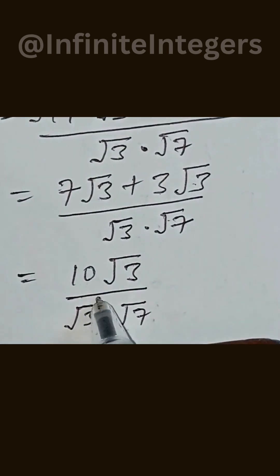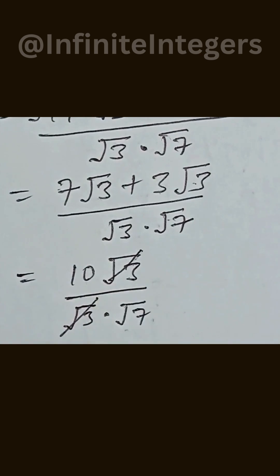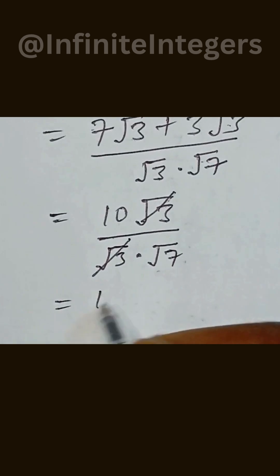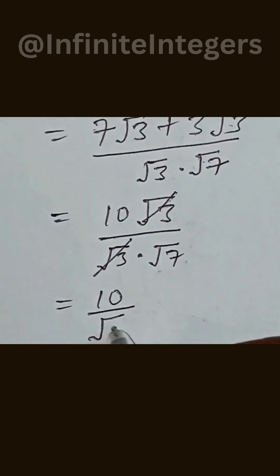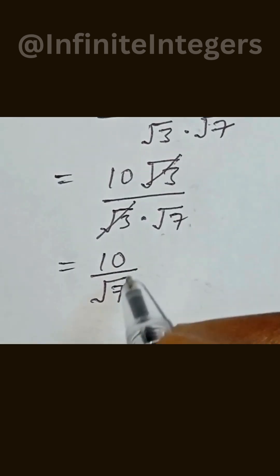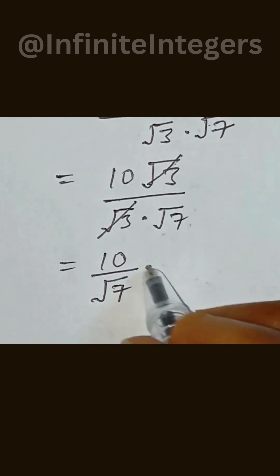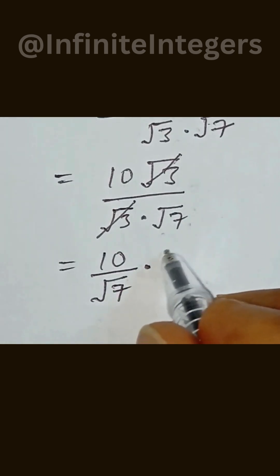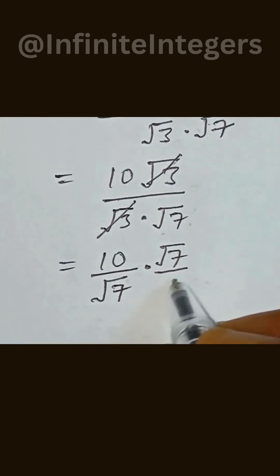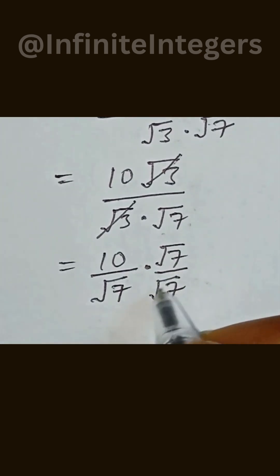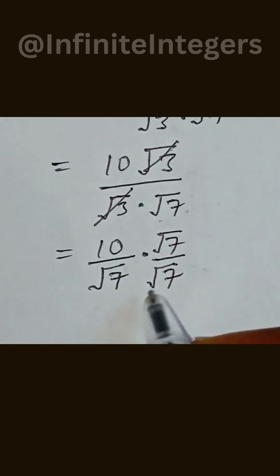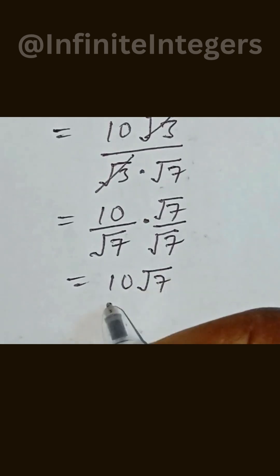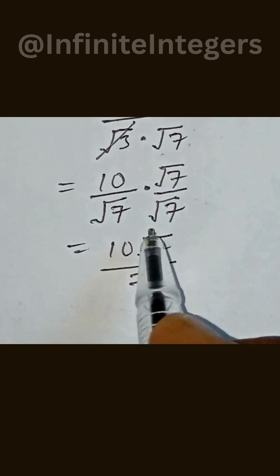So here we can cancel the square root of 3, and we are left with 10 over square root of 7. We can now rationalize this by multiplying by what we have at the denominator — square root of 7 over square root of 7.